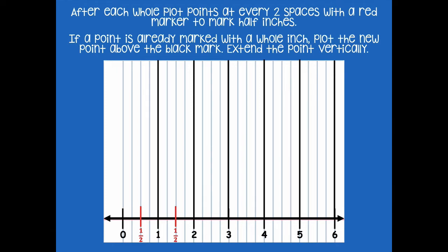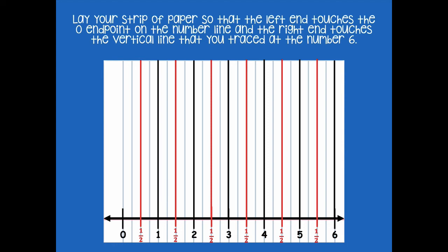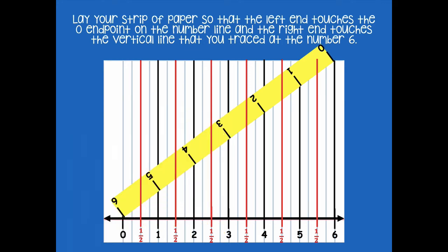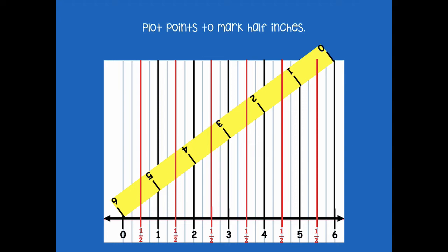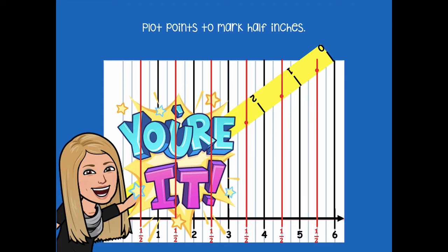Let's bring these in to make sure yours looks like mine, and then connect those vertically. Lay your strip of paper so that the left end touches the zero end point on the number line and the right end touches the vertical line at the number six — just like this. Pause the video, line up your number line again. Then plot the points to mark half inches — wherever the red lines touch my number line, I draw a dot. Pause the video, do the same thing, and then click play when you're ready for the next step.